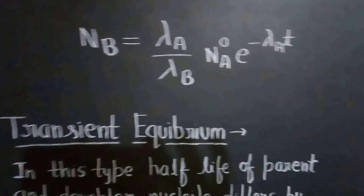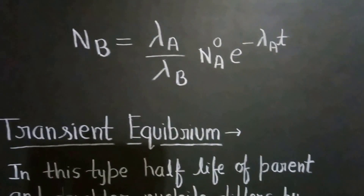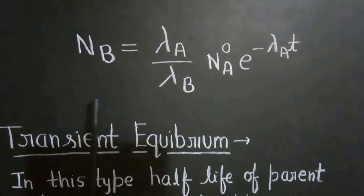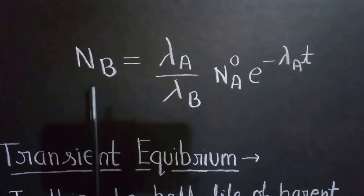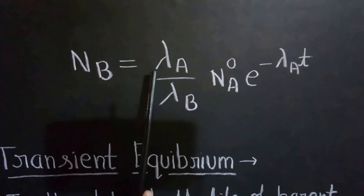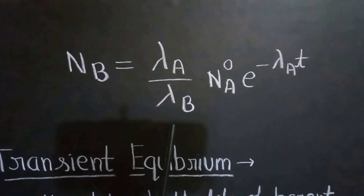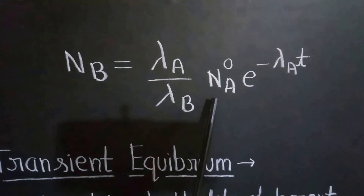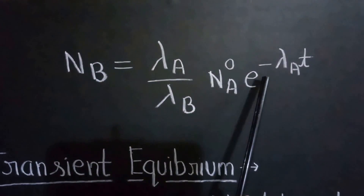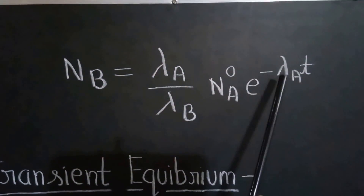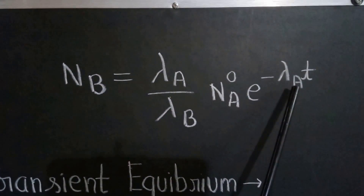For secular equilibrium, the number of atoms of B is given by: NB = (λA / λB) · N₀ · e^(−λA · T).